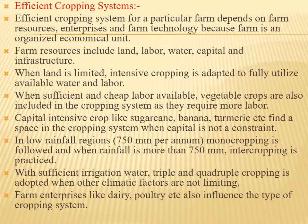When land is limited, intensive cropping is adapted to fully utilize available water and labor. When sufficient and cheap labor is available, vegetable crops are also included in the cropping system as they require more labor. Capital-intensive crops like sugarcane, banana, and turmeric find a space in a cropping system when capital is not a constraint.